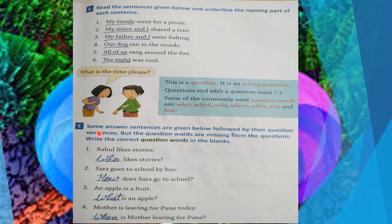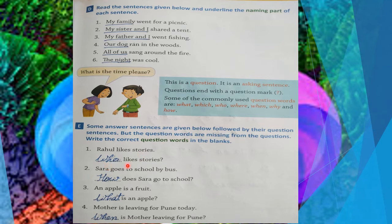Now come to the exercise. Some answered sentences are given below followed by their question sentences, but the question words are missing from the questions. Write the correct question words in the blanks. In this question, the first sentence given is the answer and the second sentence is the question.